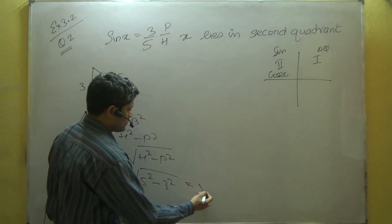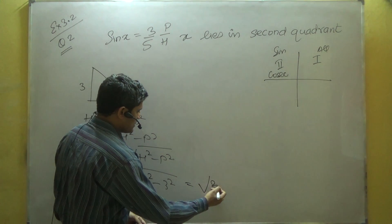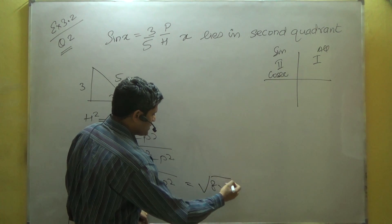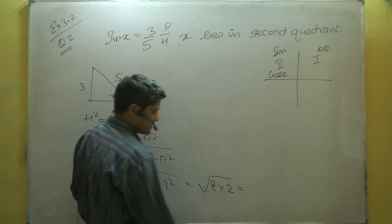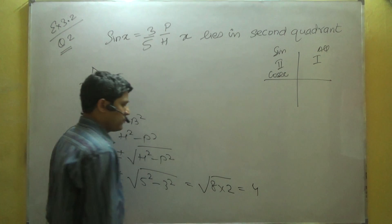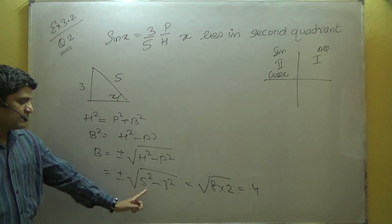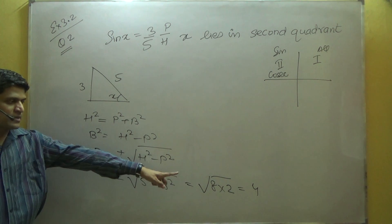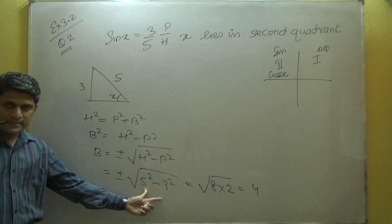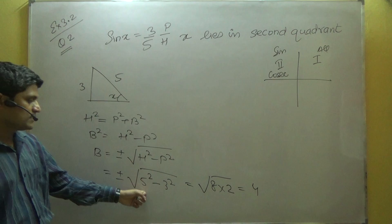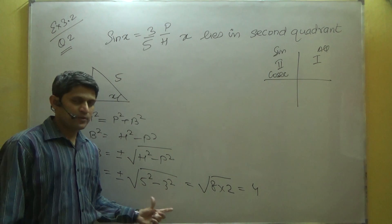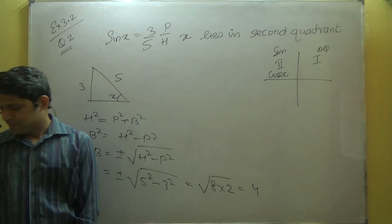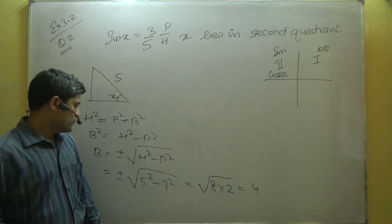5 plus 3 is 8, and 5 minus 3 is 2, so we write 8 times 2, which equals 16, and the square root of 16 is 4. This method — adding and subtracting, then multiplying — is easier than squaring, subtracting, and taking the root separately. So the base value is 4.